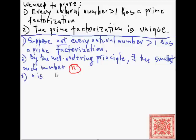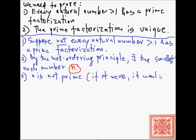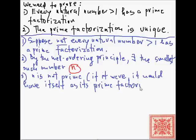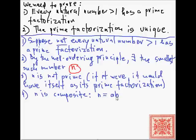By the well-ordering principle, there is such a number n. And n is not prime, because if it were prime, then it would have itself as its own unique prime factorization. There are only two choices: if it's a natural number and it's not prime, then it must be composite. In other words, n is a product of two numbers, a and b, that are necessarily greater than 1 but less than n.